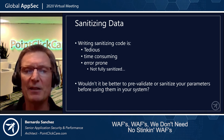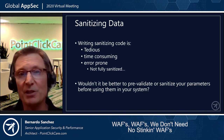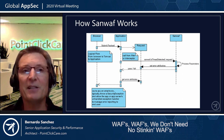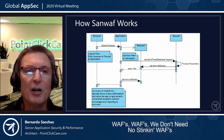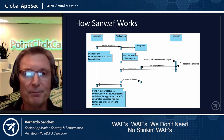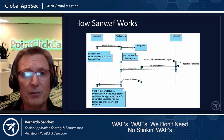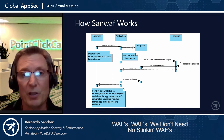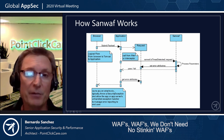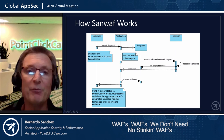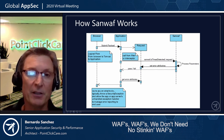Wouldn't it be better to pre-validate or sanitize your parameters before using them in your system? Let's take a look at how SANWAF works at a 50,000-foot level — a logical view from the browser to Tomcat to the application. The browser sends some payload; let's assume there's an evil payload. The application calls SANWAF's isThreatDetected, passing in the request object. SANWAF processes the parameters, looks for errors, compiles them, sets the error attributes onto the request object, and returns a pass or fail.